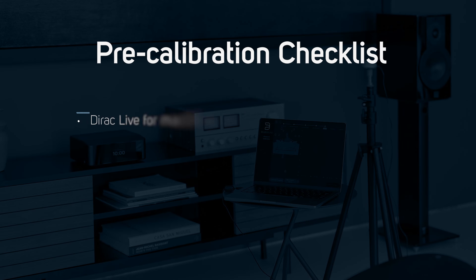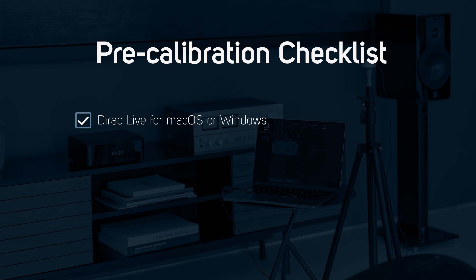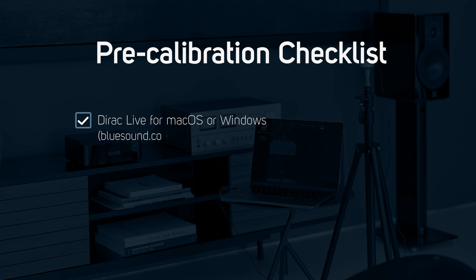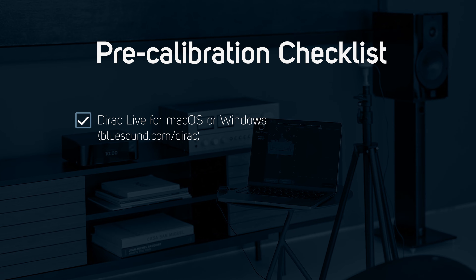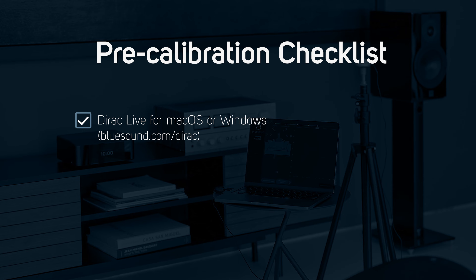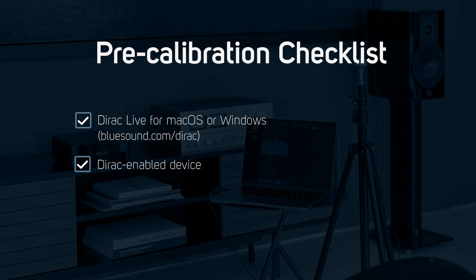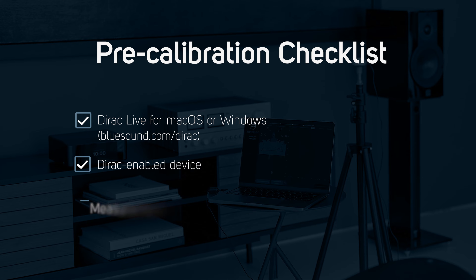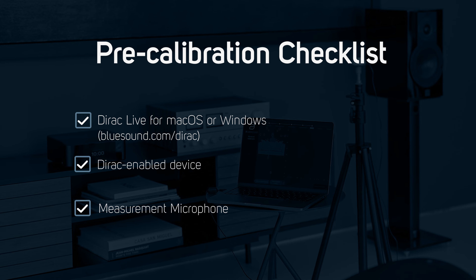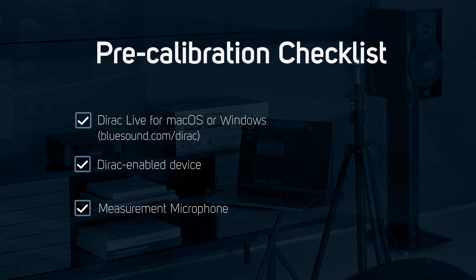Before you get started, please ensure you visit bluesound.com/Dirac to download the Dirac Live app, the Bluesound Target Curve, and purchase your desired Dirac license. Make sure you have a Dirac enabled Bluesound player and a certified measurement microphone.